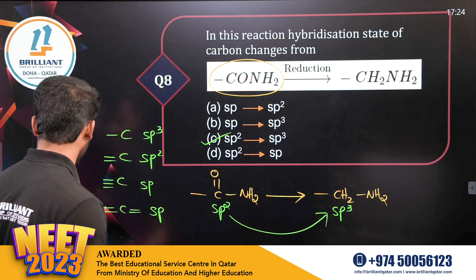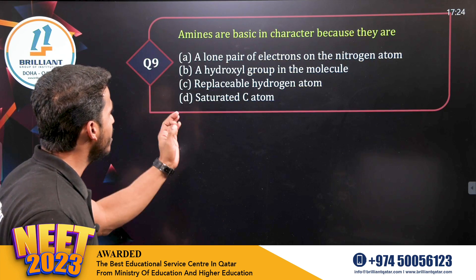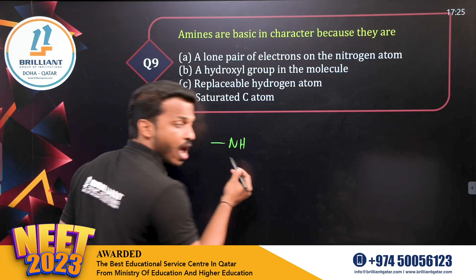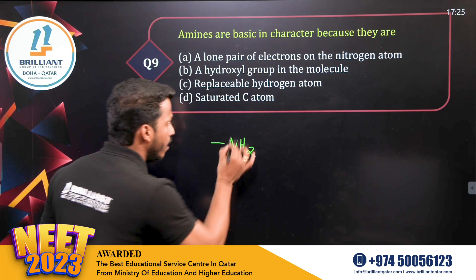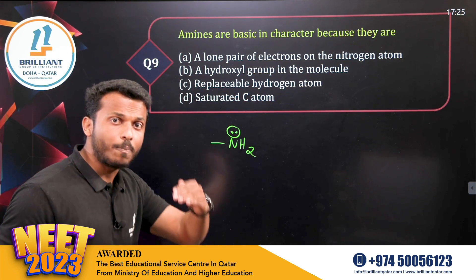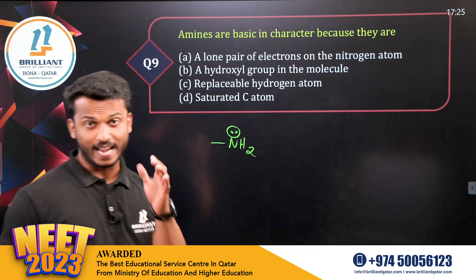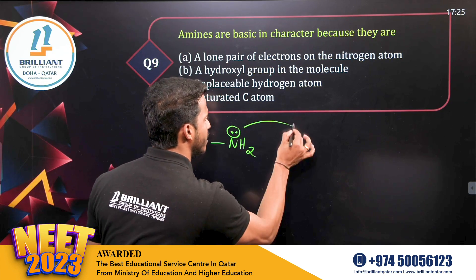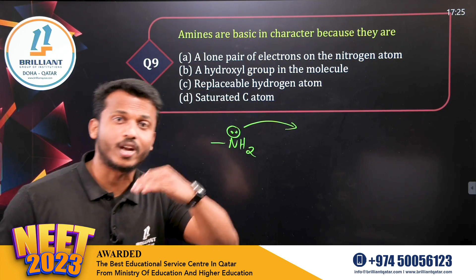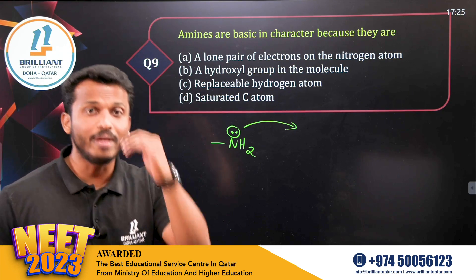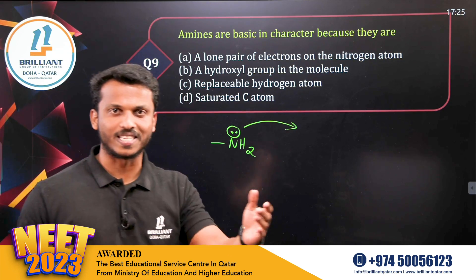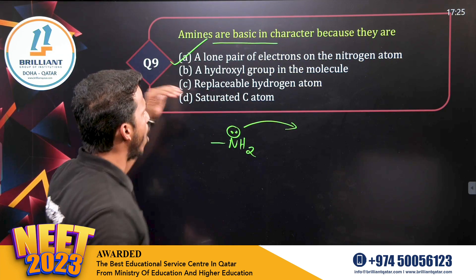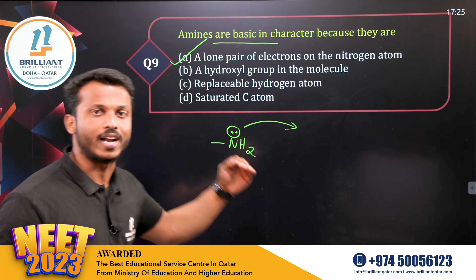Question number nine: amines are basic in character. Why? Amines are derivatives of ammonia. For example, in a primary amine, nitrogen has a lone pair. Since lone pair donors — or electron pair donors — are Lewis bases, amines are Lewis bases because the lone pair on nitrogen can be donated. So amines are basic in nature because of the lone pair of electrons on the nitrogen atom that can be donated.